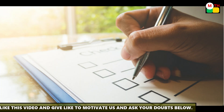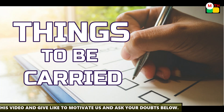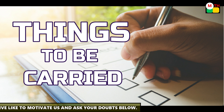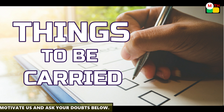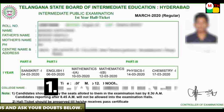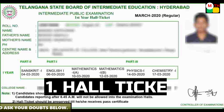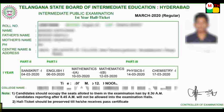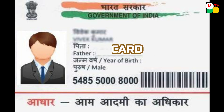First, we will talk about things to be carried. The first thing is the hall ticket — this is the main important thing. Second, we will talk about the ID proof.